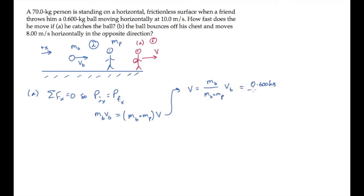Substituting all the values and calculating shows that the ball and the person drift off together at eight and a half centimeters per second.